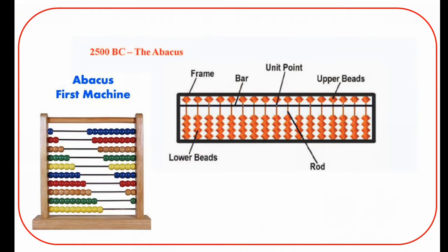Initially, abacus was used for calculations. Mostly in 2500 BC, these advanced calculations were being made by the abacus. Even today we are using it for speed calculations.